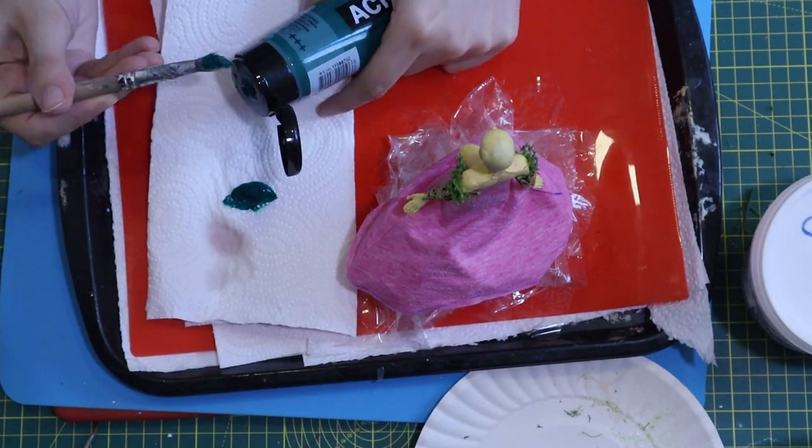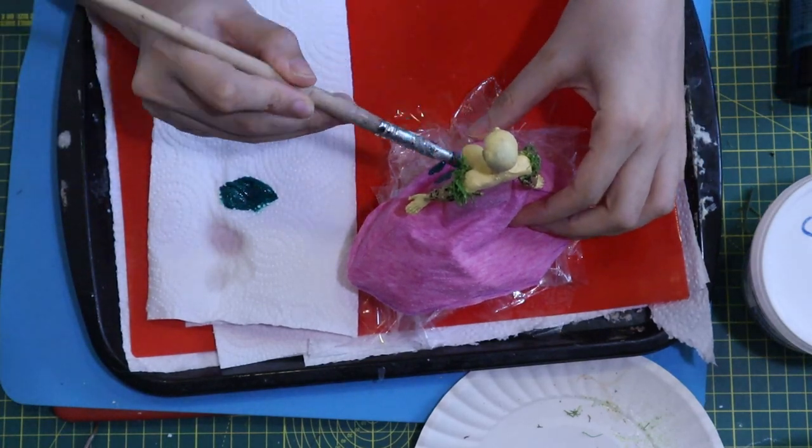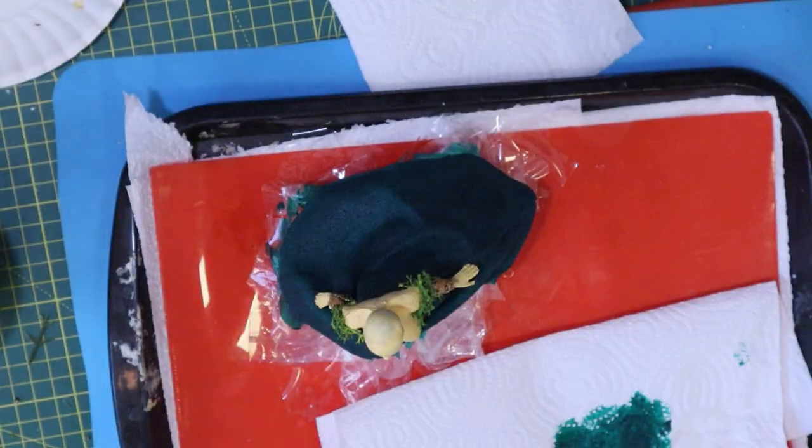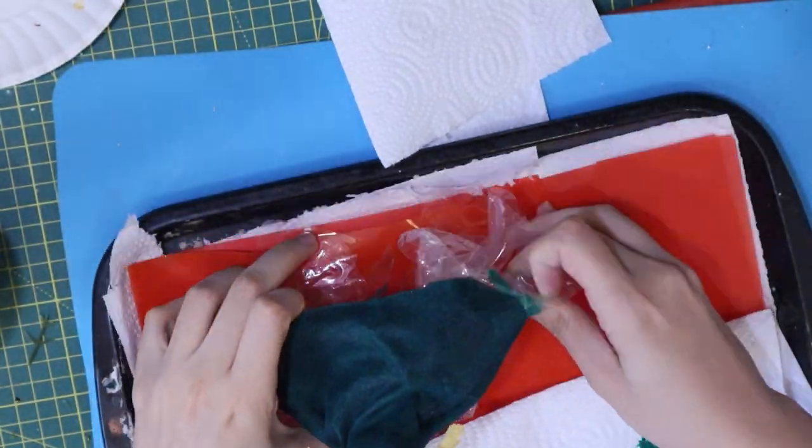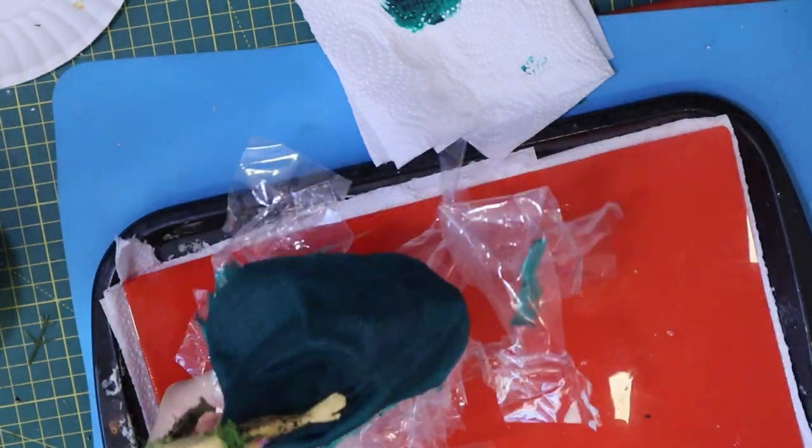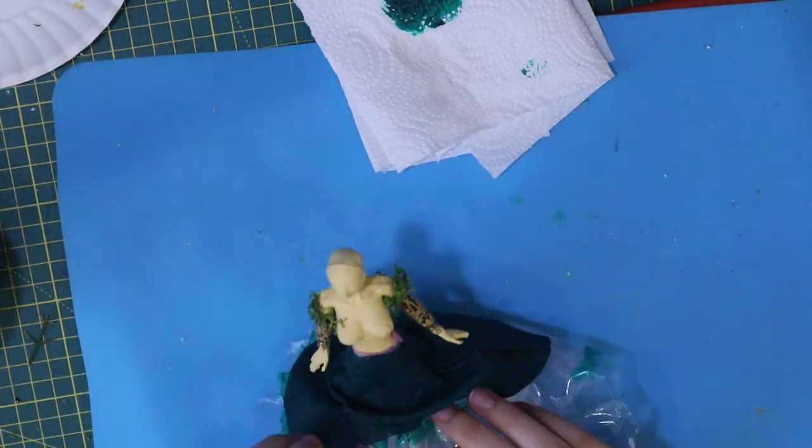After it's dry I cover it in green acrylic paint. When I remove the plastic, the skirt will stay in its place as if it's flapping in the air.